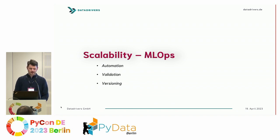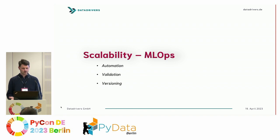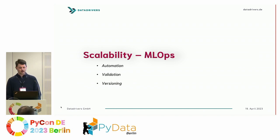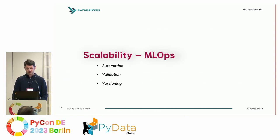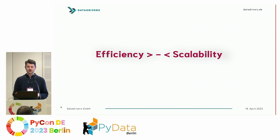A few more things that matter for scalability: automation, validation, and versioning. Automating tasks and making work less redundant obviously helps you scale your system. Validating data and your system early on is very important. Versioning will help you as well. Efficiency and scalability can be thought of as design principles that are important, and they move in somewhat different directions — but they can help you make decisions.